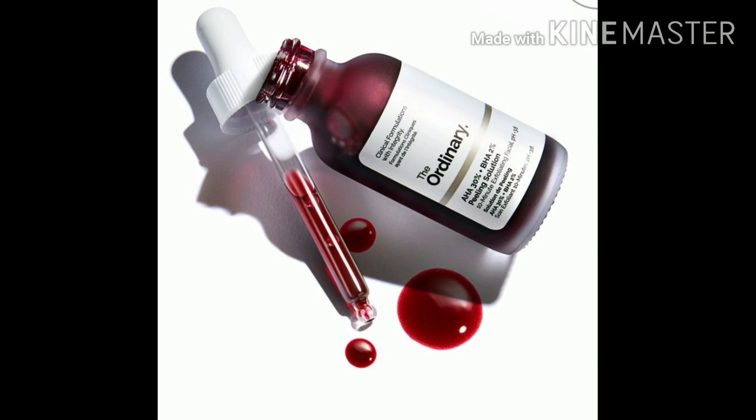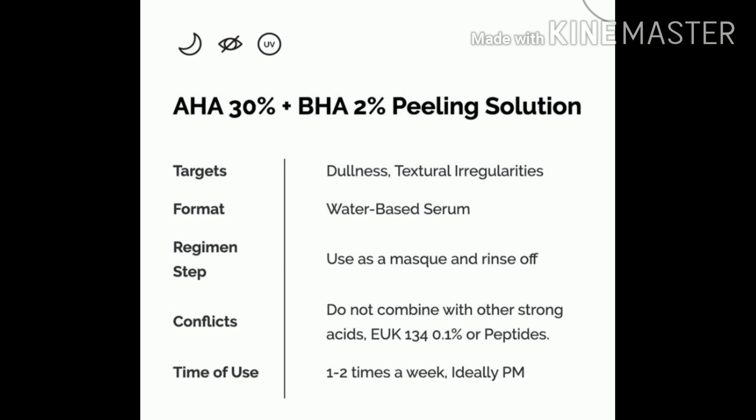At Indian websites, there is a general guideline. You can see the details on the brand's own website. In other countries, you can see the product online as well. The product lineup includes: an AHA and BHA solution, a chemical peel, and a niacinamide solution. The AHA and BHA is a 3% solution.